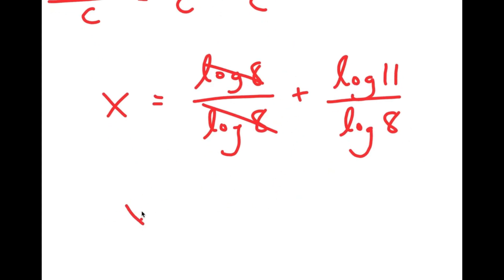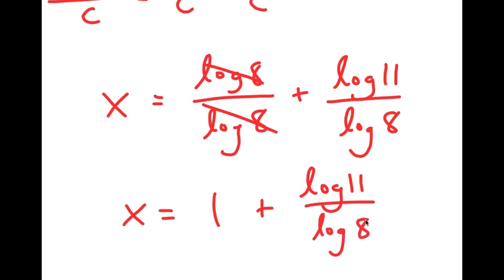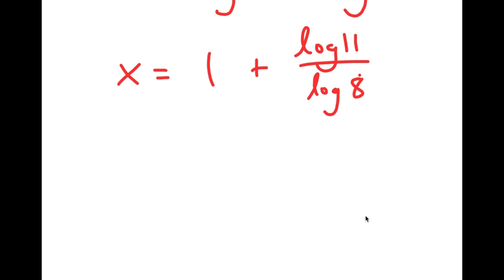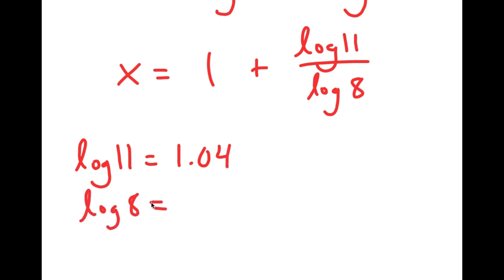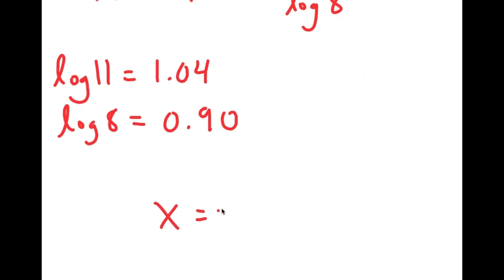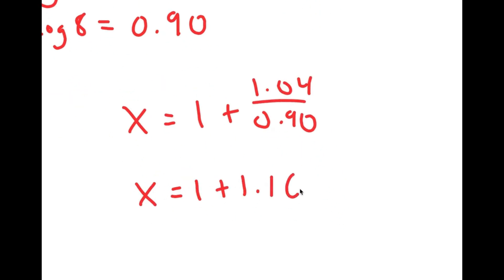Now, log 8 and log 8 cancel out to get 1, so I get 1 plus log 11 over log 8. All that's left is to plug in the actual values of log 11 and log 8 and solve. Log 11 is equal to approximately 1.04, and log 8 is equal to approximately 0.90. So I get x is equal to 1 plus 1.04 over 0.90, which is equal to 1 plus 1.16, meaning x is equal to 2.16. This is my answer.